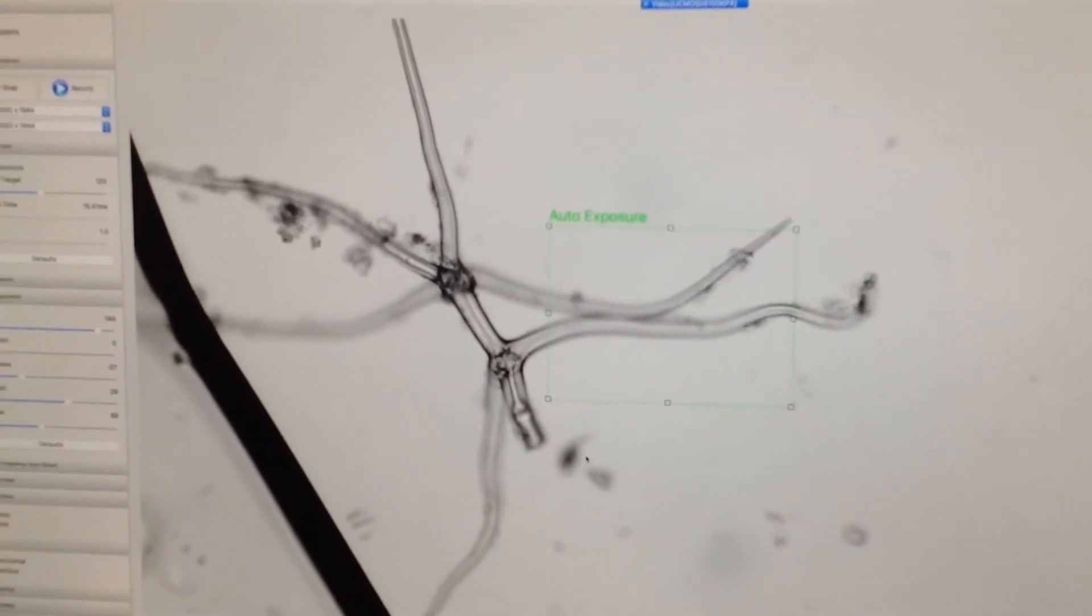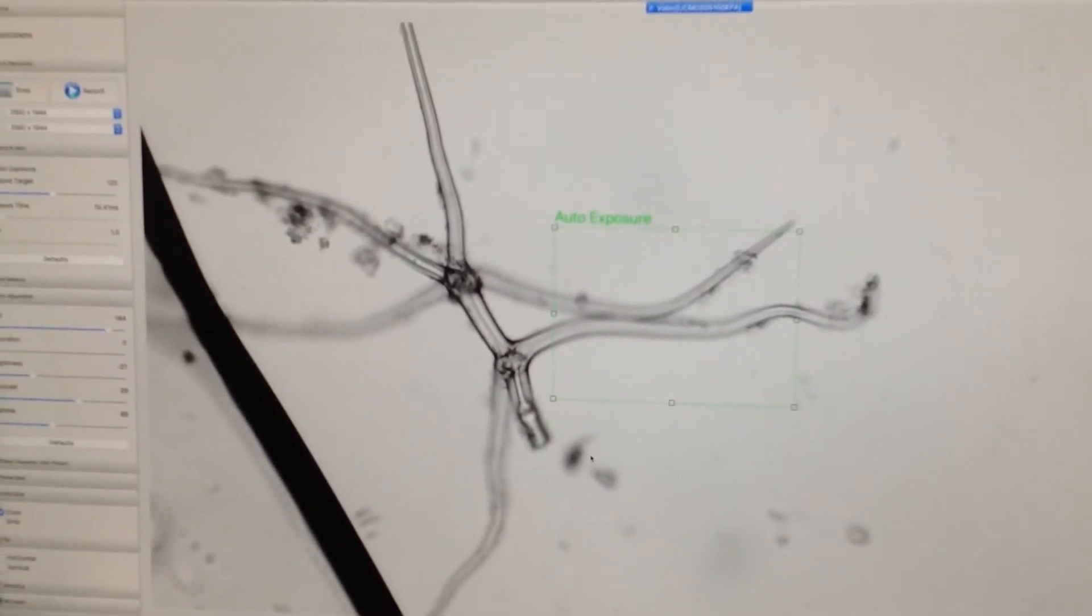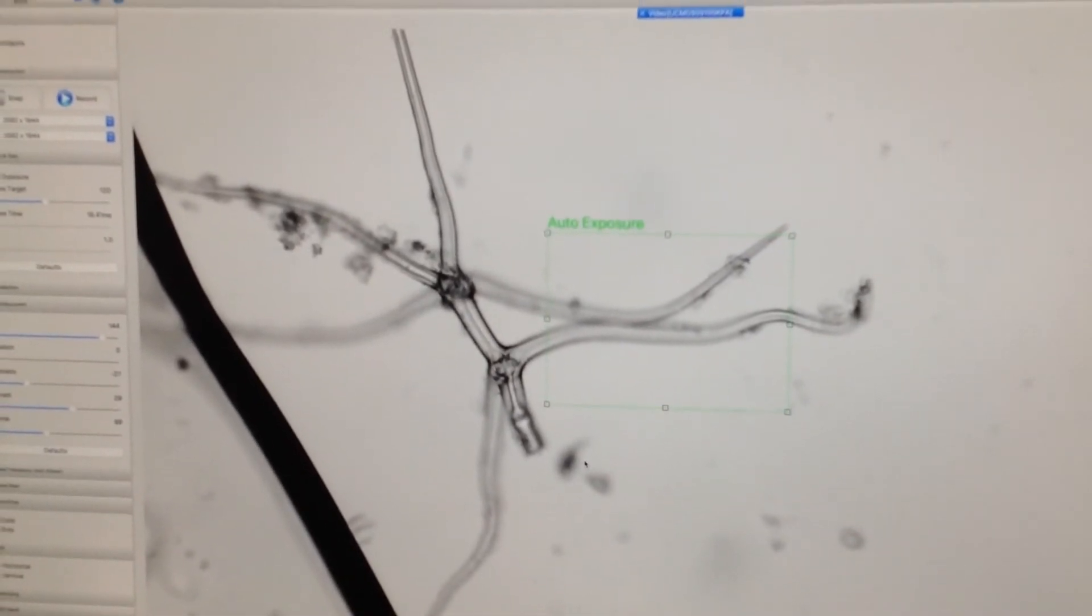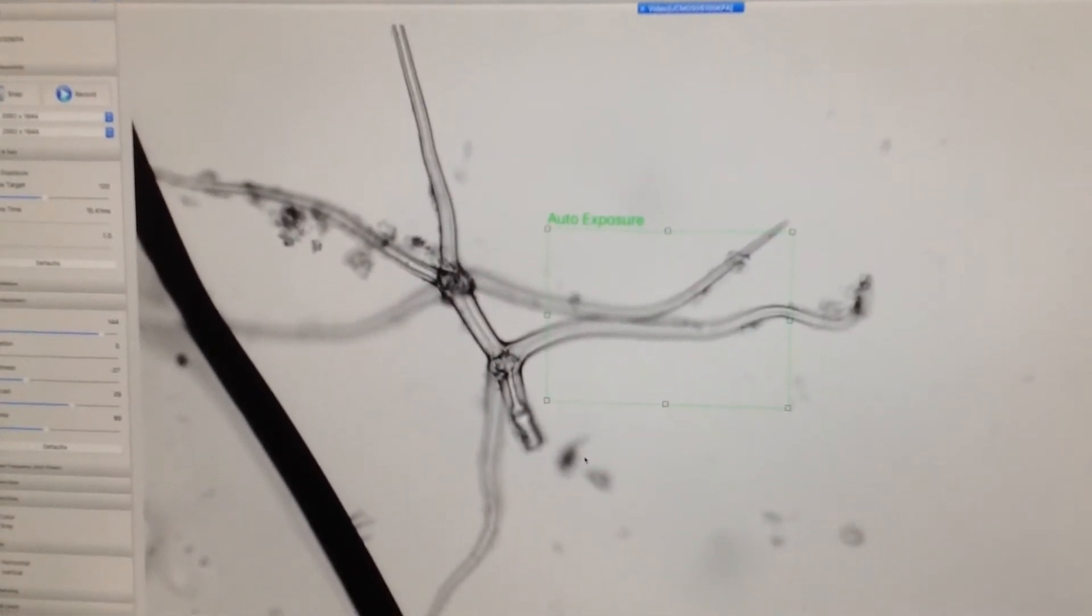That right there could be some form of algae or plant life that is growing, that we might be able to see with the naked eye if it was bigger. But there's also smaller fragments where we can only look at it in a microscope.